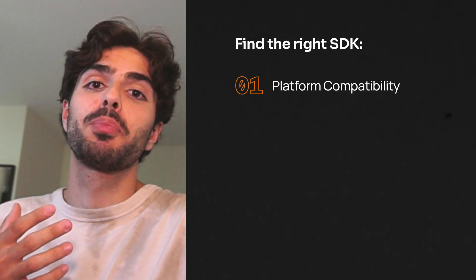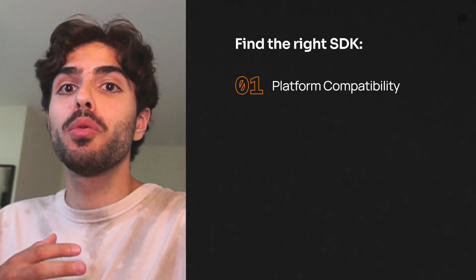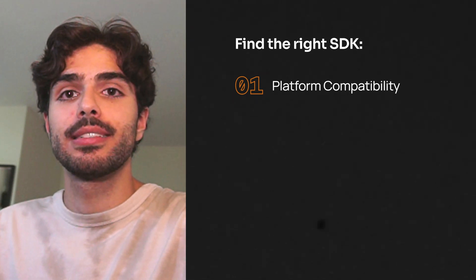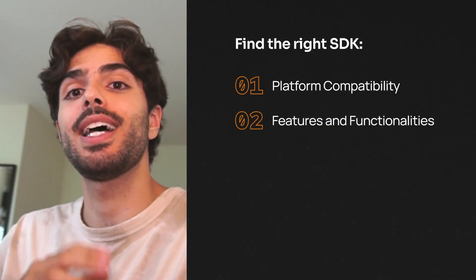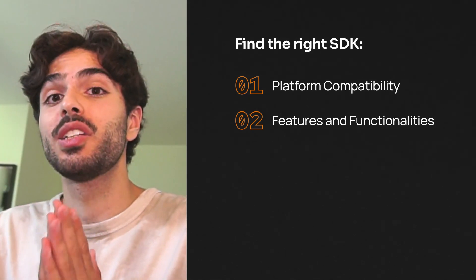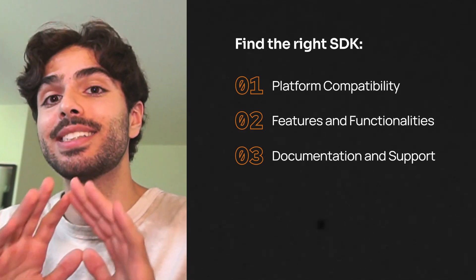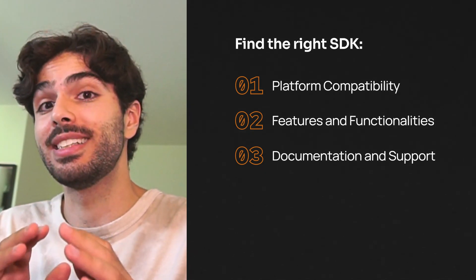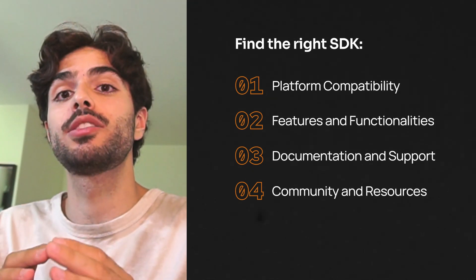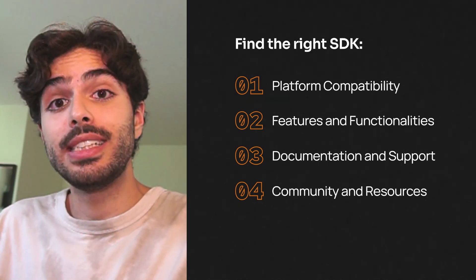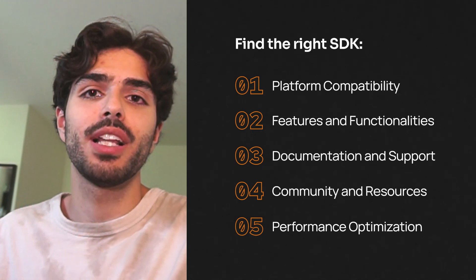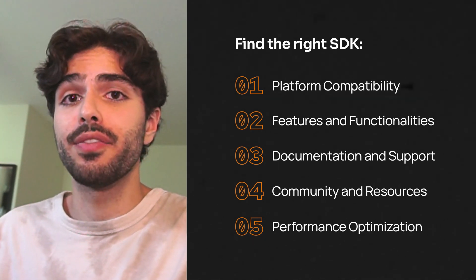So how do you find the one that's just right for you? First, make sure the SDK supports the platforms you're targeting — for example, it would need to support iOS if you're building for Apple devices. Next, explore the features and functionalities the SDK offers: does it have everything you need to bring your vision to life? Don't forget about documentation and support — having a helpful community and resources can be a night and day difference when troubleshooting. Last but not least, consider performance optimization and ease of use; if the project isn't running well or you can't develop easily with it, you might want to consider a different one.